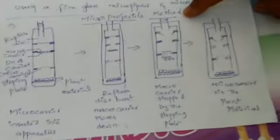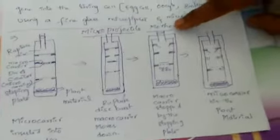The microprojectile method is another physical method for transferring genes. This microprojectile method is the most effective, versatile, and successful method for gene transfer.